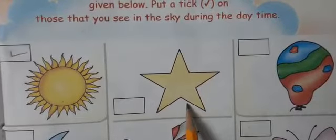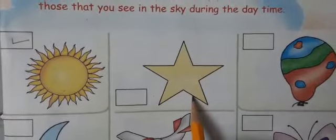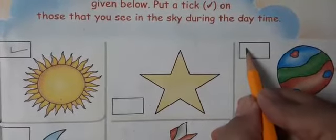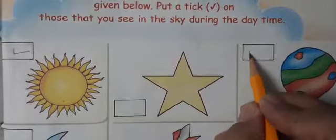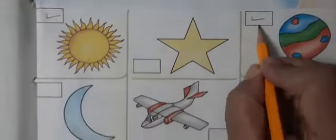Star — we can't see it in the morning time, so we will not put a tick here. Balloon — we can see it in the morning, so we will put a tick here.